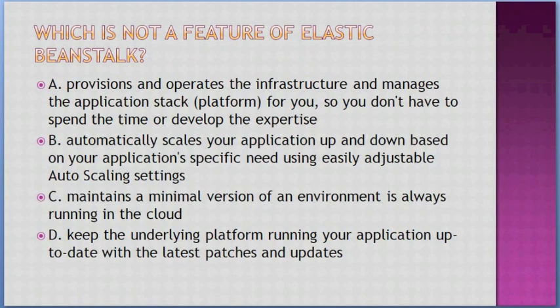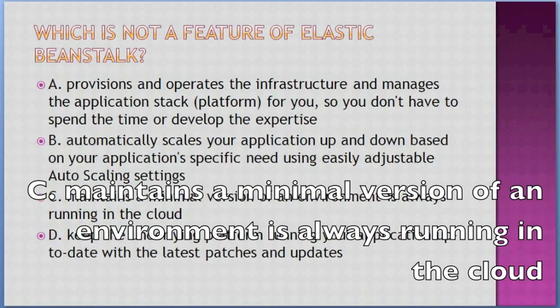Which is not a feature of Elastic Beanstalk? Options: A. Provisions and operates the infrastructure and manages the application stack platform for you, B. Automatically scales your application up and down based on your application-specific needs using auto scaling, C. Maintains the minimum version of an environment always running in the cloud, D. Keeps the underlying platform running your application up-to-date with the latest patches. Answer: C — maintains the minimum version of an environment always running in the cloud.